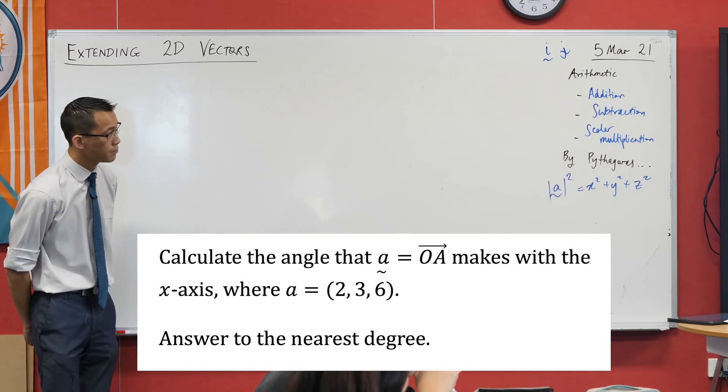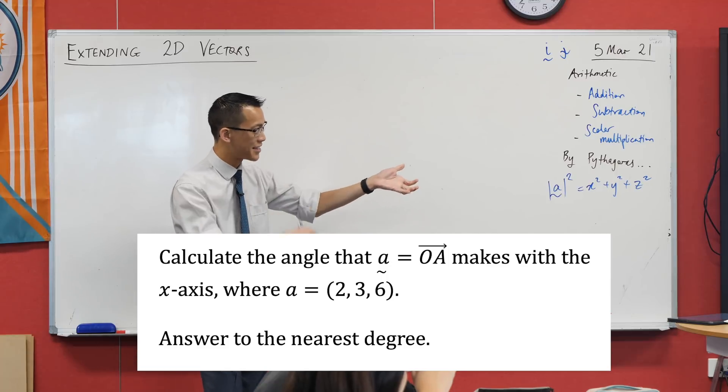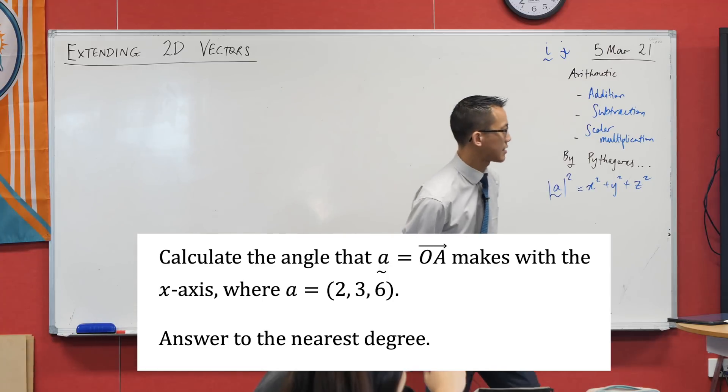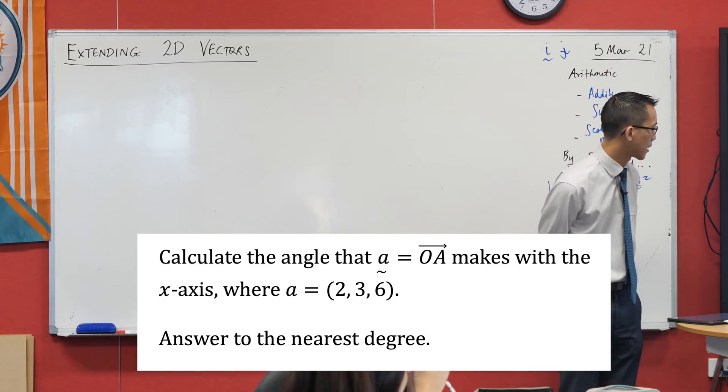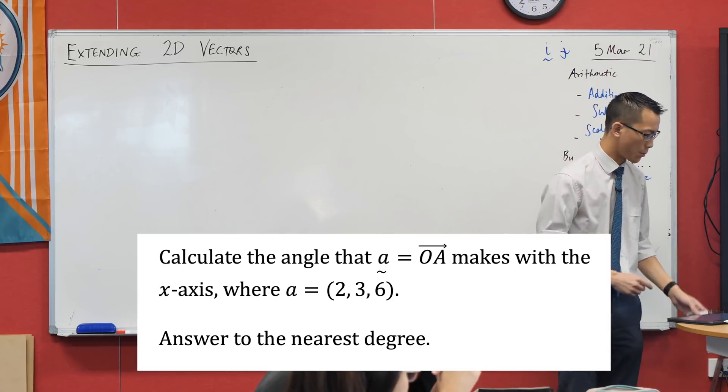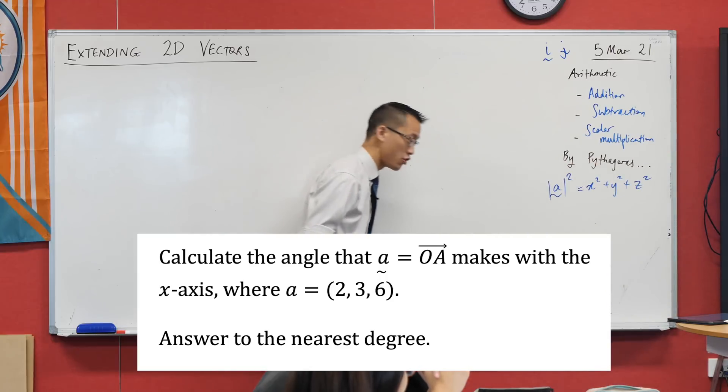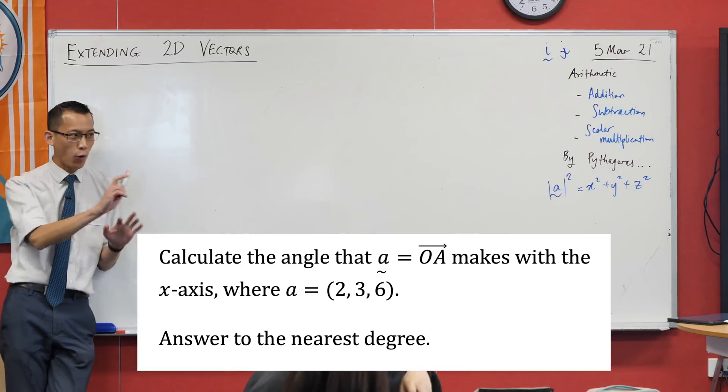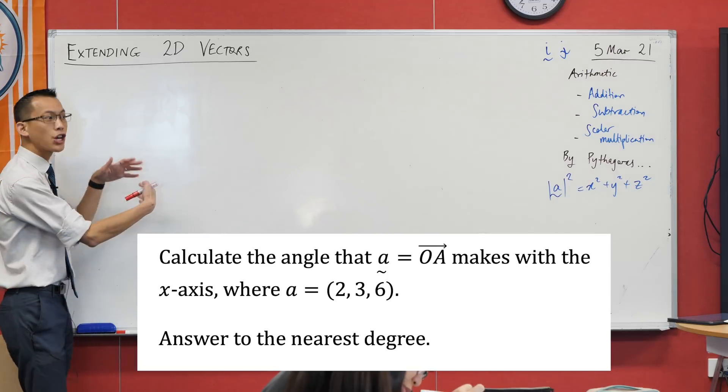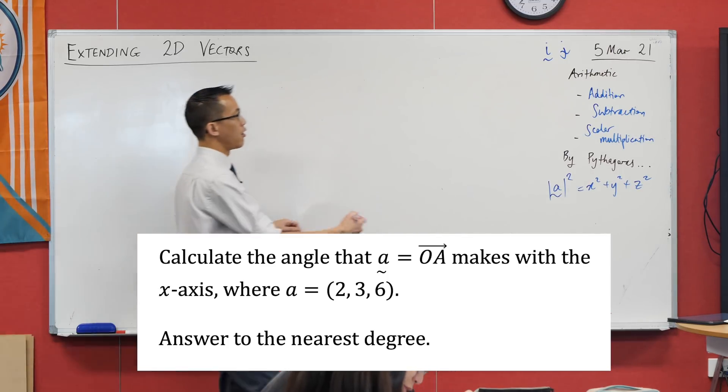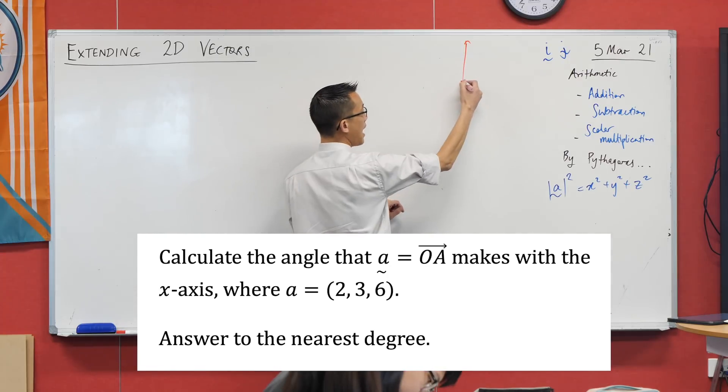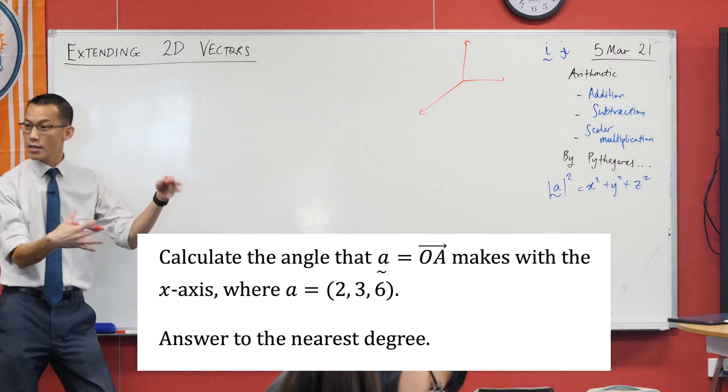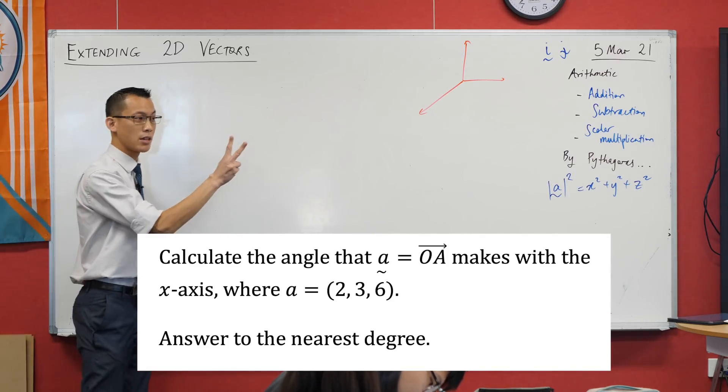So let's have a look at this. Calculate the angle that this vector, which we're calling little a, which goes from the origin to point capital A, calculate the angle that makes with the x-axis where you've got some coordinates for A. And we're going to use our calculators to get to the nearest degree. The place we should always start with any kind of problem that involves geometry is a diagram. Five stars. Now, you might remember I showed you a canonical version, like a classic version of our three-dimensional diagram, with z going up, and x coming out at you, and y going to the right.